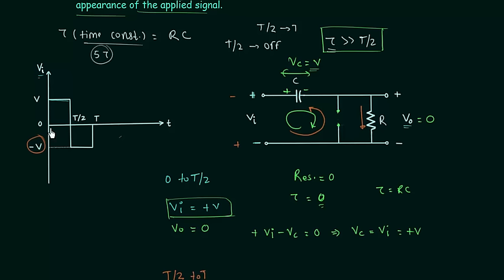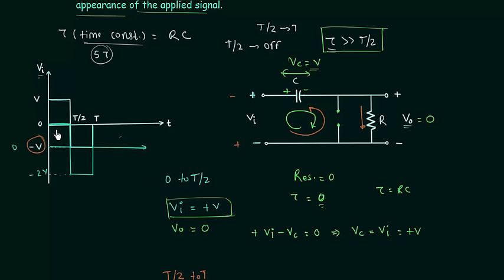We can now plot the output waveform. From 0 to T/2, the output voltage is 0. From T/2 to T, the output voltage is minus 2V. We have changed the DC level: the signal is shifted from minus V to minus 2V. The waveform appearance is unchanged — if you consider minus V as the origin and look at only the shifted waveform, it is similar to the input waveform. Only the DC level of the applied signal has changed.